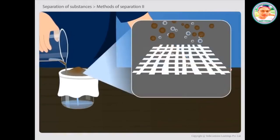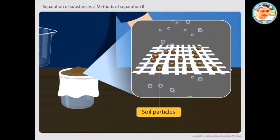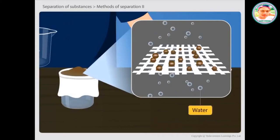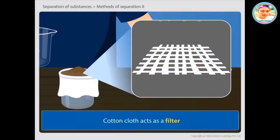Now pour the mixture through the cloth. What do you observe? You will observe that soil particles remained in the cloth while the water passes through the cloth and gets collected in the second beaker. This is because cotton cloth acts as a filter.